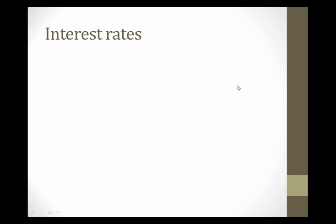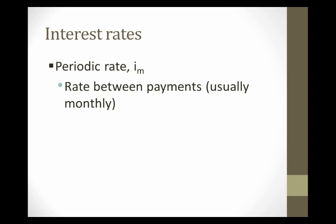When we're looking at a fixed payment loan, there are several different ways to measure the interest rate. We have to be careful what interest rate we're talking about so that we can understand and compare alternate credit terms on fixed payment loans. Let's start with the periodic rate. In a fixed payment loan that has monthly payments, the periodic rate is the rate between payments — usually monthly. It's the interest rate you're charged on the remaining balance every single month.